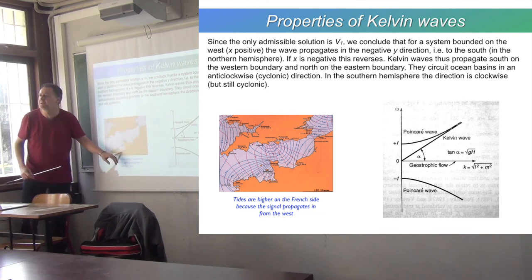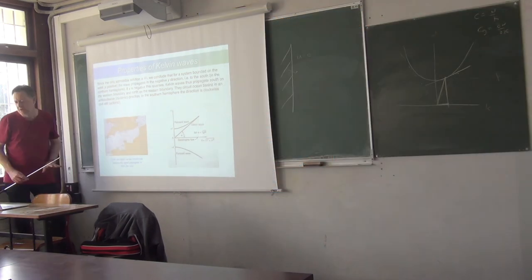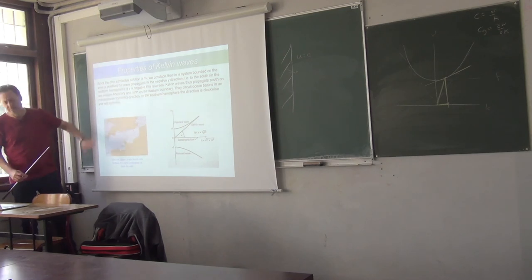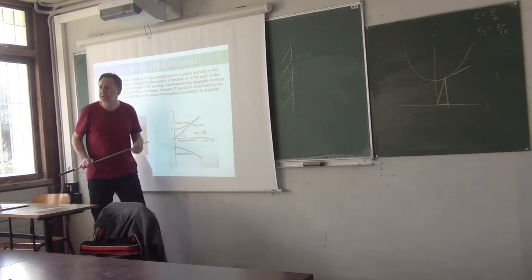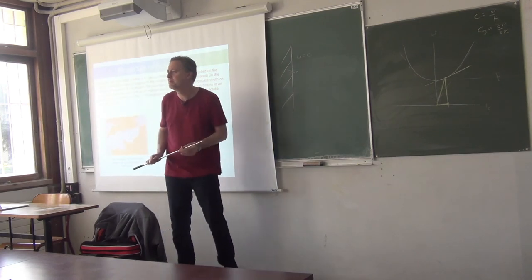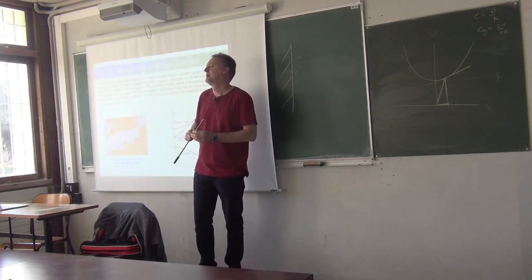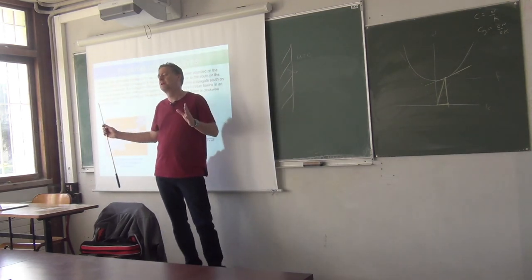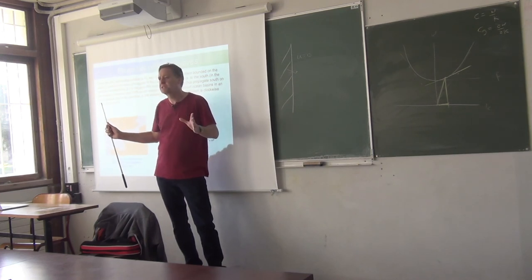And that's why we have this power station in St. Malo generating electricity from the tides. It works much better in St. Malo than it would in Portsmouth or Southampton, for example. So that is Kelvin waves—Kelvin waves are a special case of inertia-gravity waves which can have large-scale propagation even when there's rotation in the system.